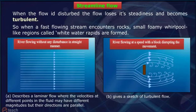First figure describes a laminar flow where the velocities at different points in the fluid may have different magnitudes but the directions are parallel. And the second one gives a sketch of turbulent flow.